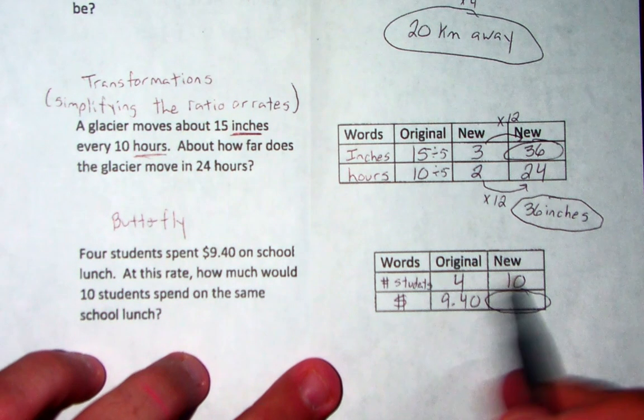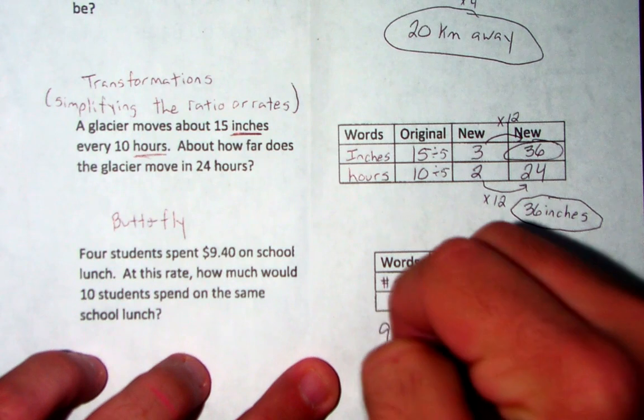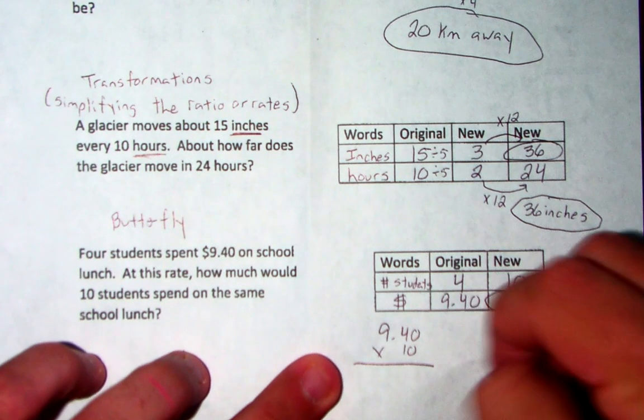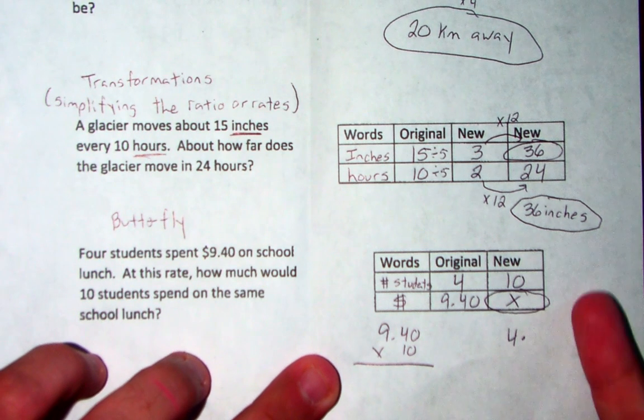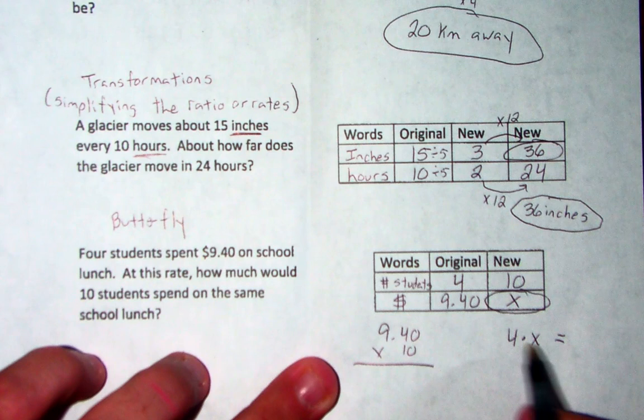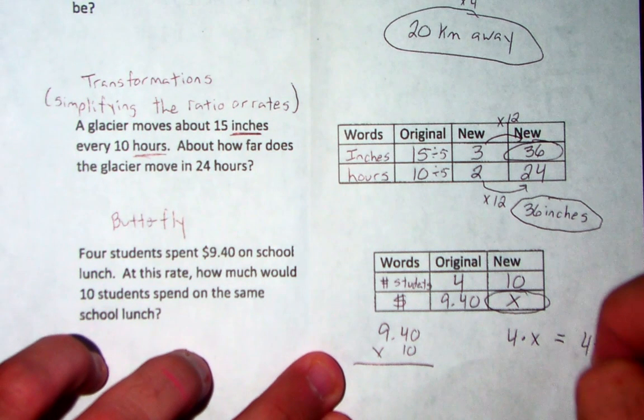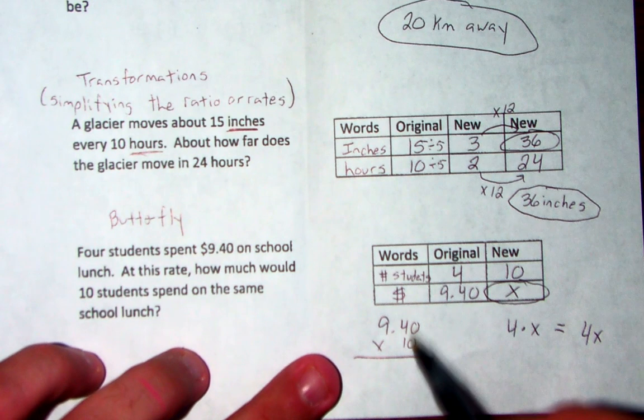You do cross multiplication. So 9.40 times 10. And then 4 times, I'm just going to call it x because it's unknown. We don't know what it is. Well, 4 times x, you just combine it. That's 4x. So we're going to do a little bit of algebra here in a minute. Alright.